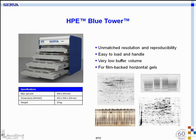For higher throughput, Serva offers the so-called high-performance electrophoresis Blue Tower. You can run four gels simultaneously with unmatched resolution and reproducibility. It is very easy to load and handle, works with very low buffer volume, and is tailor-made for film-backed horizontal gels.